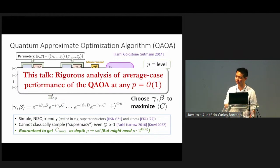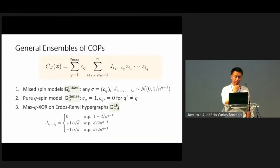This talk will be about rigorous results on the analysis of average case performance of the QAOA at any constant level. We'll consider very general ensembles of COPs. You can think of a cost function as written as sum over up to Q body couplings, where maybe you have some constant cutoff Q max, and for each group of qubits, you have some assigned coupling J, as well as a coefficient that weighs the different Q body couplings differently.